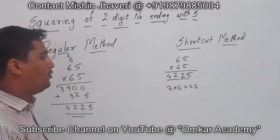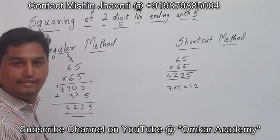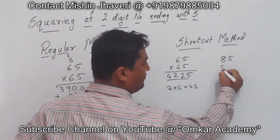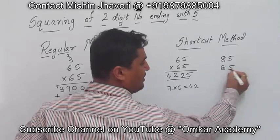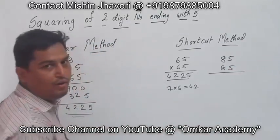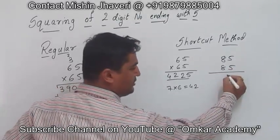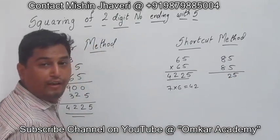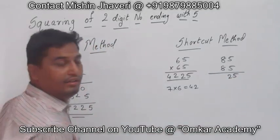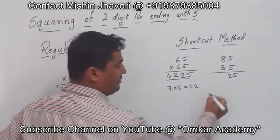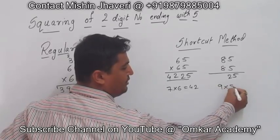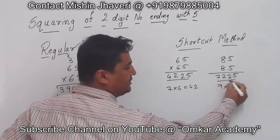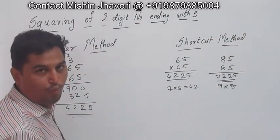Now I am going to do one more example: 85 into 85. As per our rule, write 25 straight away. What is the next number of 8? It is 9. So 9 into 8 is 72. So my answer is 7225.